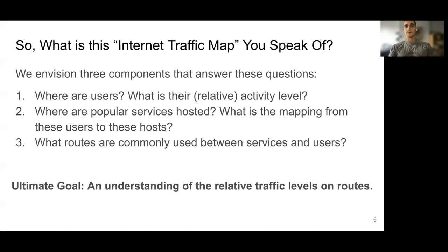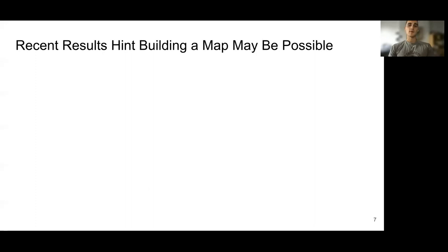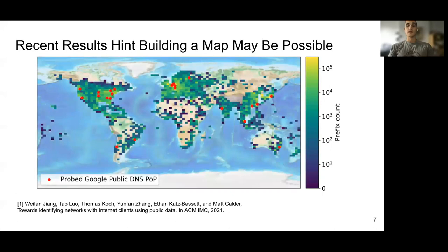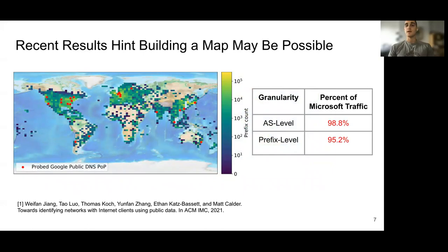Recent published results hint that building a map may be possible. This figure from a recent IMC paper shows the number of prefixes with active clients, where regions with more active prefixes are shown with brighter colors. To uncover networks with clients, we probe caches in Google Public DNS PoPs using vantage points around the globe. Although coverage in South America still needs work, this method is close to the coverage of Microsoft, a global cloud and content provider. We confirmed by looking at Microsoft logs that the prefixes we identified as having clients account for 95.2% of traffic to Microsoft.